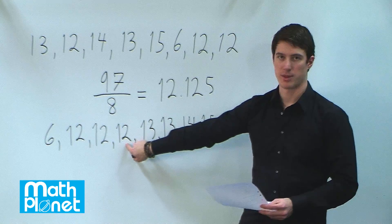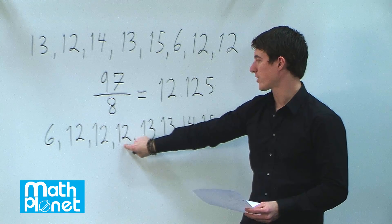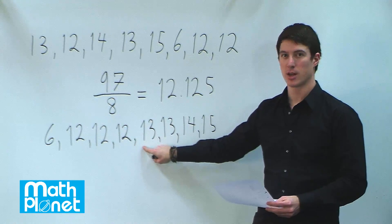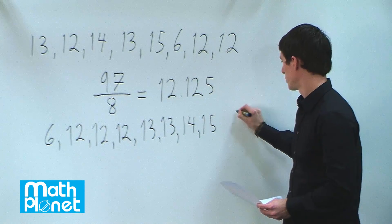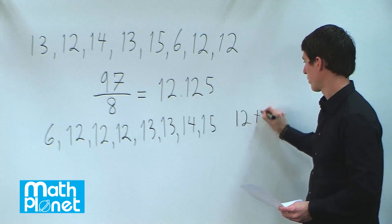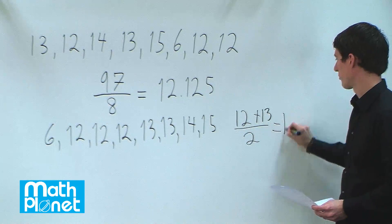So we have to find the two middle numbers and find the average of those. So basically, what's halfway between 12 and 13? So obviously that's going to be 12.5, or you could say 12 plus 13 over 2, which is equal to 12.5.